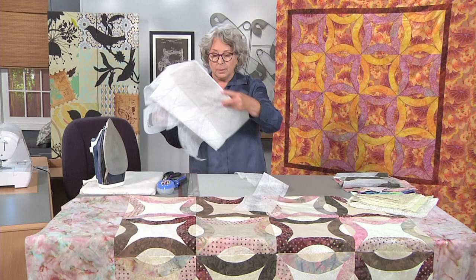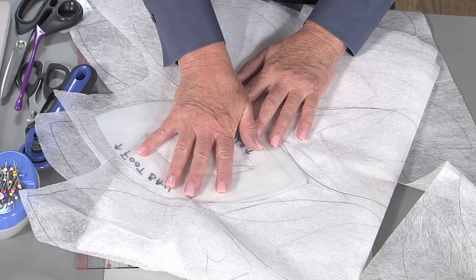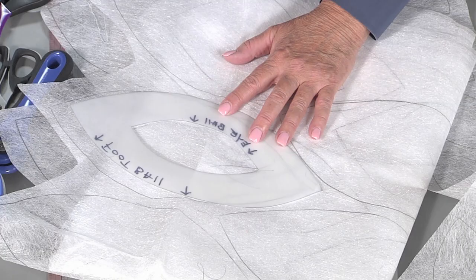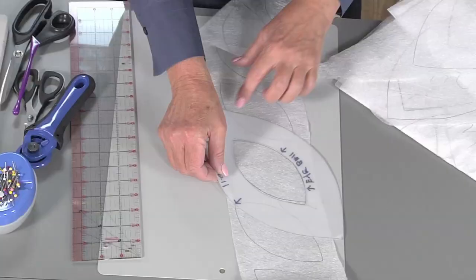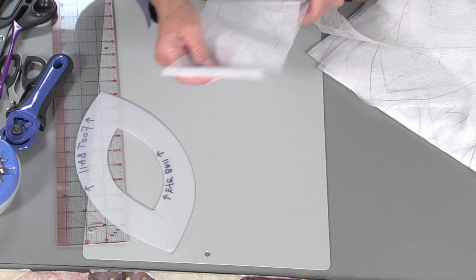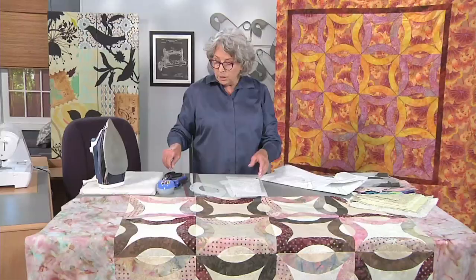So I have taken my template, and I've traced all of my footballs onto the pattern tracing material. For each block, you're going to need two footballs. So you can figure out how many you'll need. And then I've used the center to trace all of my eyeballs on another piece of the pattern tracing material.